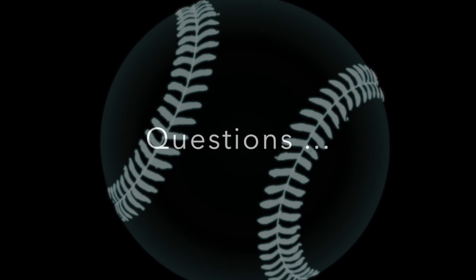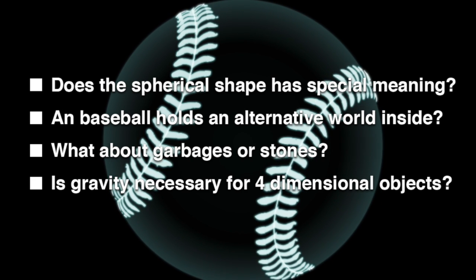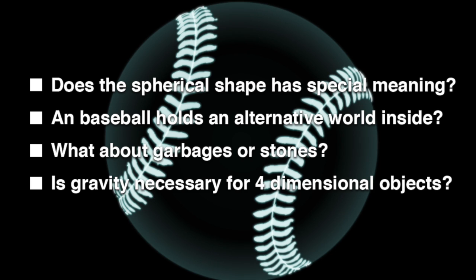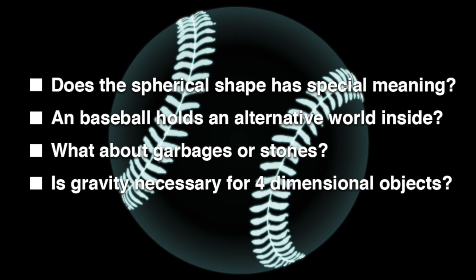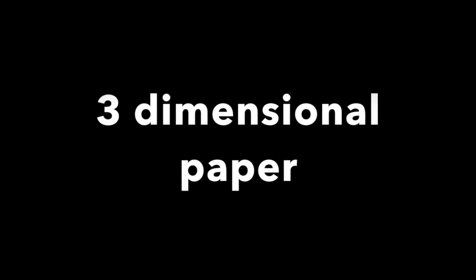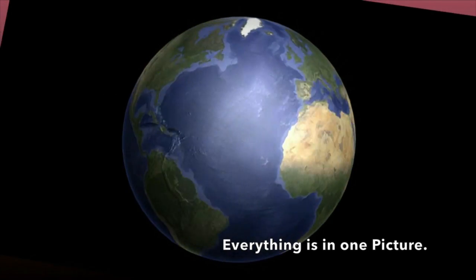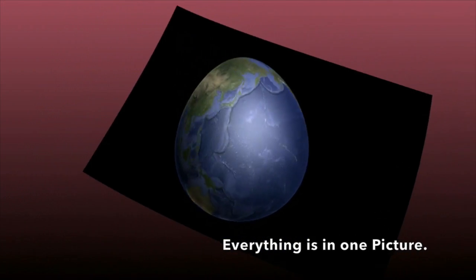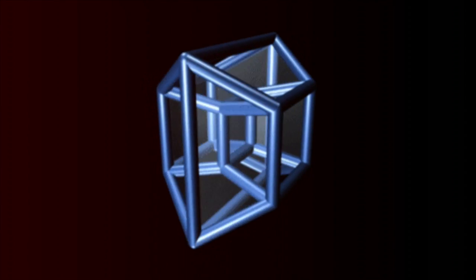I focused on planet Earth, but what about other objects? Does the spherical shape have a special meaning? Does a baseball hold an alternative world inside? What about garbage or stones? Is gravity necessary for four-dimensional objects? Assuming that every object on planet Earth is written on a sheet of three-dimensional paper, everything has the same four-dimensional depth. So even if four dimensions exist, every object doesn't have to be a four-manifold, and we don't have to worry about four-dimensional depth when building architecture.